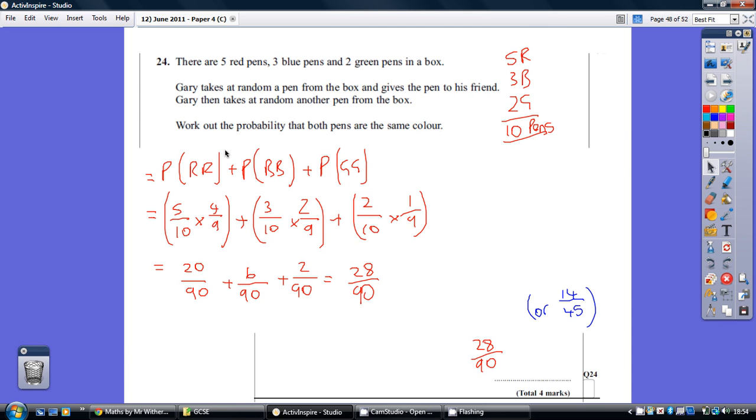the chances of a red then a red, well, we've got ten pens to start with, so on our first pick, the chance of a red is 5 out of 10. However, that pen is then gone. What's the chance then of getting a red? Well, it's 4, but it's 4 out of 9, because that first pen is gone. So 5 over 10 times 4 over 9.